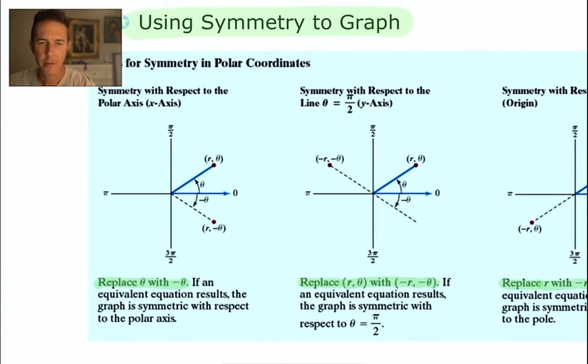Symmetry with respect to the polar axis, formerly known as the x-axis - to test if a graph has symmetry about this horizontal axis, we take the θ value in our polar equation and replace it with -θ. If after making that substitution we can manipulate the resulting equation to look exactly like the original equation, then the graph will exhibit polar axis symmetry.